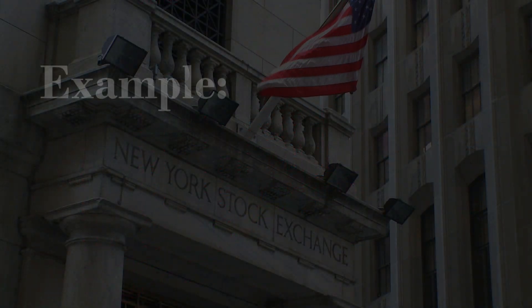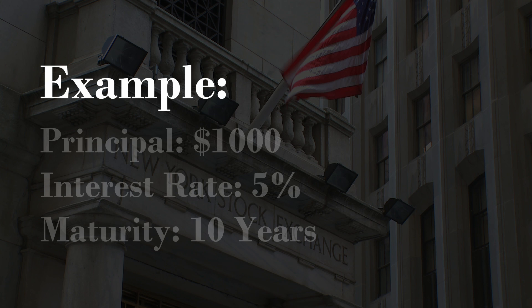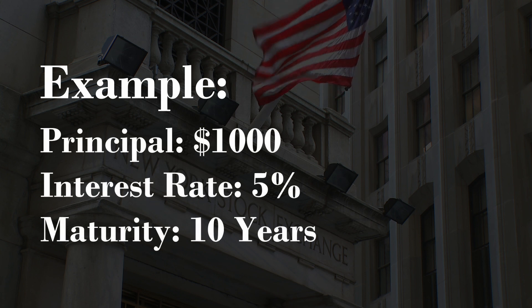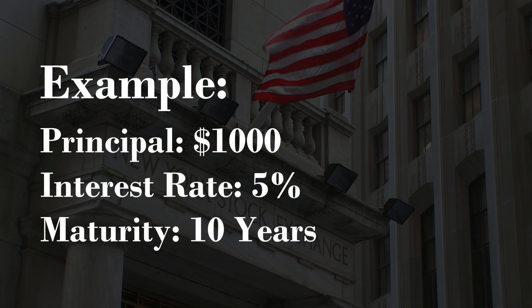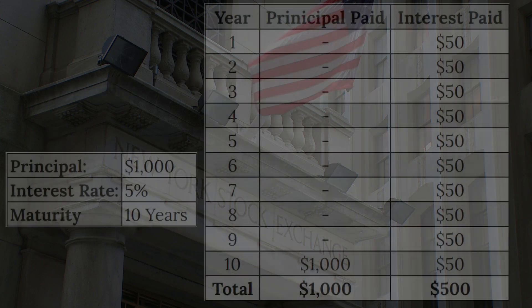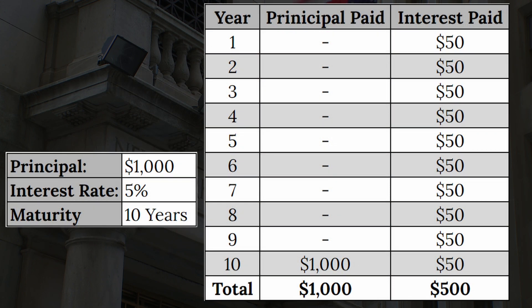Looking at a more detailed example using that 5%, let's say you have a $1,000 bond with a 10-year maturity. Each year, you'd receive $50 in interest, which is $1,000 times 5%. And in year 10, you get your principal back as well. The total interest you earned over those 10 years would be $500.